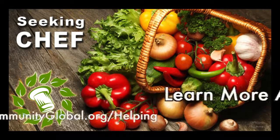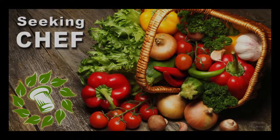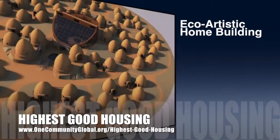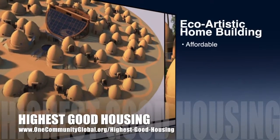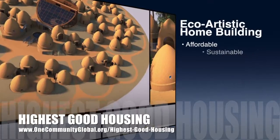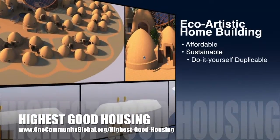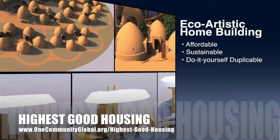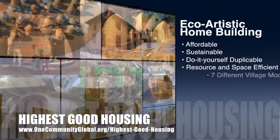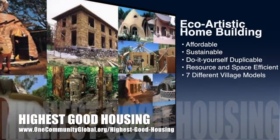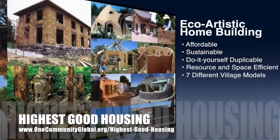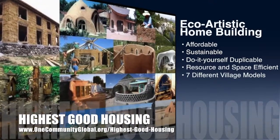The One Community approach to highest good housing is eco-artistic home building that is affordable, sustainable, do-it-yourself, duplicable, resource and space efficient, and consists of seven different sustainably constructed village models.